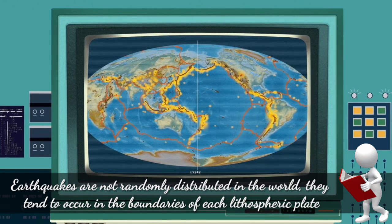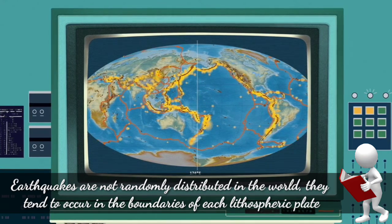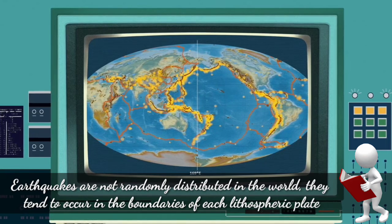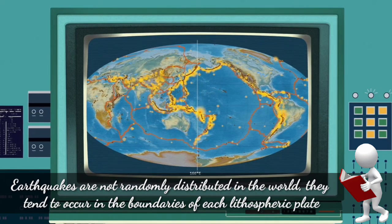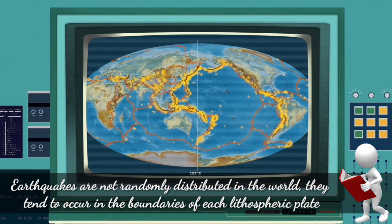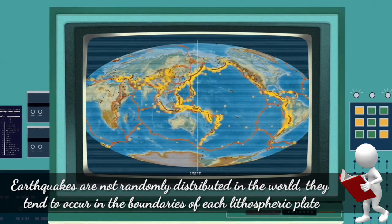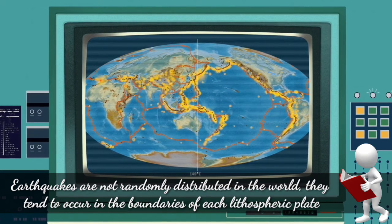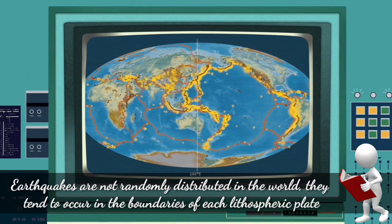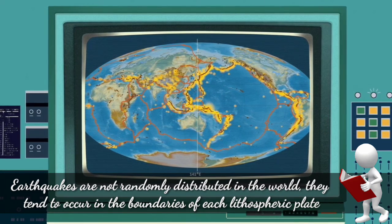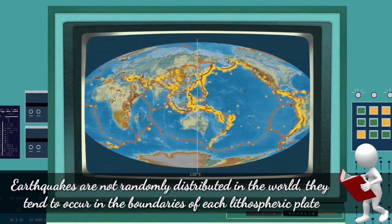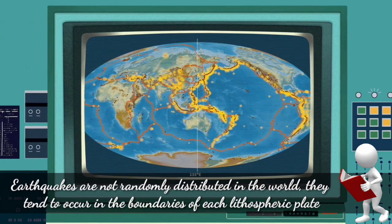In this map, the yellow dots represent the earthquakes. As you can see, earthquakes are not randomly distributed in the world. They tend to occur at the boundaries of each lithospheric plate.